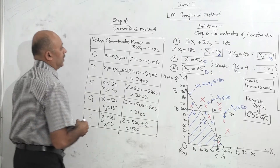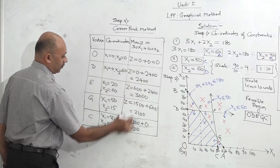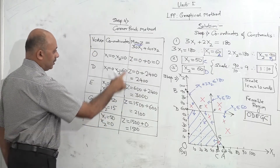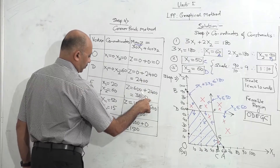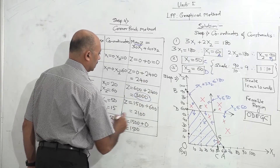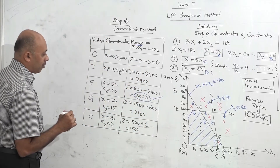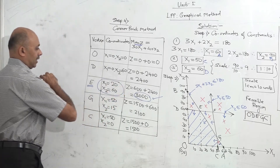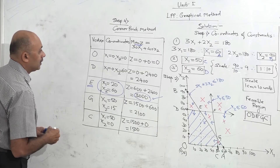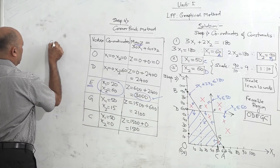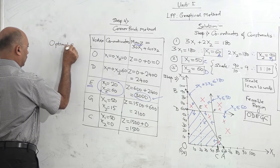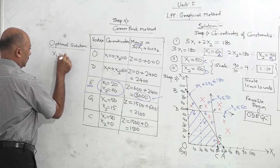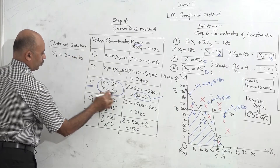Now our solution is at one of these corner points. Our objective function is max Z, so we need the highest or maximum answer. Comparing the values — 0, 2400, 3000, 2100, 1500 — the highest value of Z is 3000. It means our maximum profit is 3000, which is at point E. This is our optimal solution. We can now write our final answer: x1 equal to 20 units, x2 is equal to 60 units, and max Z is equal to 3000.